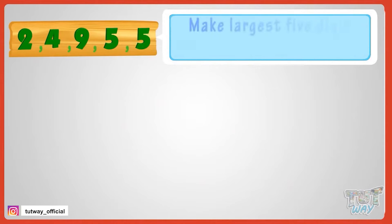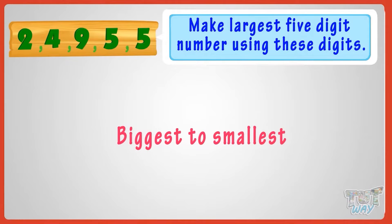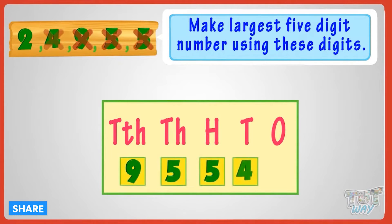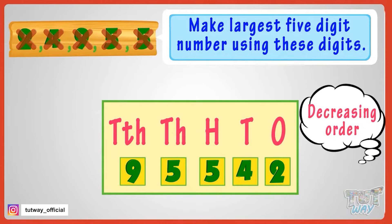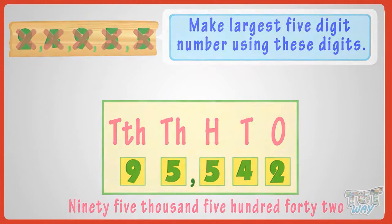Now let's take another example. Here we have five numbers and we have to make the largest five-digit number using these numbers. Arrange the numbers from biggest to smallest. Since 5 appears twice, we place them together, giving us ninety-five thousand five hundred and forty-two — 95,542 — which is the biggest number that can be formed using the given digits.